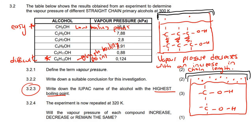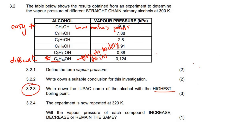When boiling point is low, things are easy to turn into a gas, so the vapor pressure will be high. When boiling point is very high, it means that it's difficult to separate them, so there will be less of them in the gas phase and vapor pressure will be low. Make sure you understand that. So, write down the IUPAC name of the alcohol with the highest boiling point — it's the longest chain one. We've got to know how to name it. Remember they said primary alcohols and they also said straight chain.